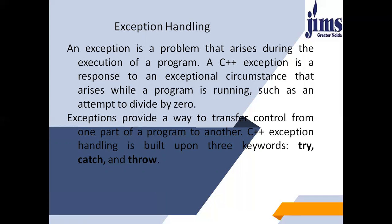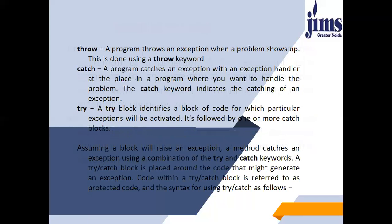The try and catch keywords come in pairs. Throw: a program throws an exception when a problem shows up, done using the throw keyword. Catch: a program catches an exception with an exception handler at the place in a program where you want to handle the problem — the catch keyword indicates the catching of an exception. Try: a try block identifies a block of code for which particular exceptions will be activated, and it is followed by one or more catch blocks.